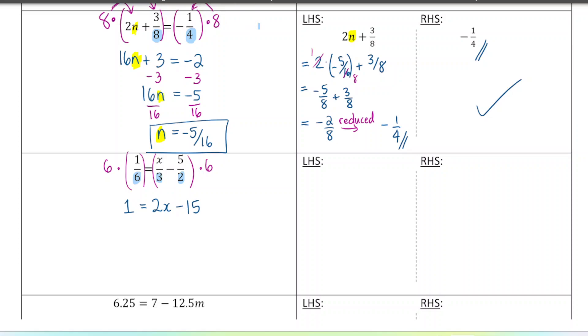Now I'm going to solve like normal. So I'm going to add 15 to both sides. I'm going a little faster now because I've shown you a few. 16 equals 2x, and then divide by 2. So I get 8 equals x.